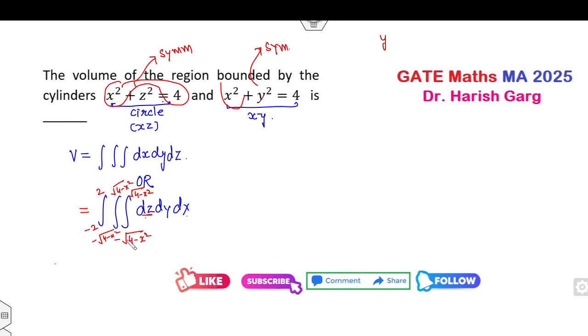First of all z is a constant. So I can write this part as 8 times, because it's even. So I can take the limits as 0 to 2, root of 4 minus x square, root of 4 minus x square. The first limit is dz then dy then dx. So what is the answer of this?